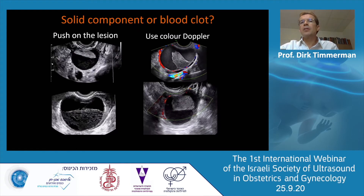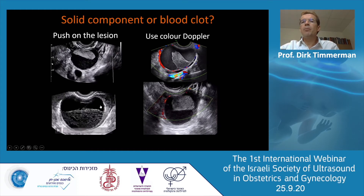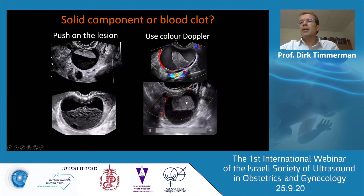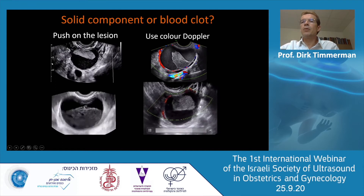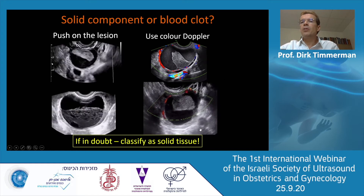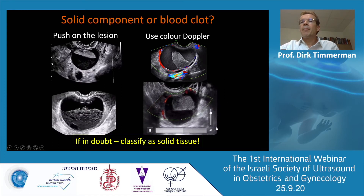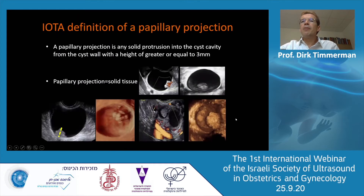On the other hand, blood clots may look like a solid lesion. It helps to push on the lesion — you see it moving, a gel-like structure. You can see that there's no flow inside the blood clot; you see flow surrounding the hemorrhagic cyst. Only if you're in doubt, you call it solid. The definition of a papillation is a projection — always a solid protrusion into the cyst cavity from the cyst wall with a height of greater than or equal to three millimeters. A papillation, by definition, is always a solid tissue.